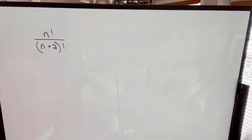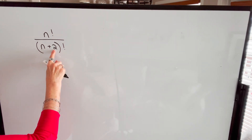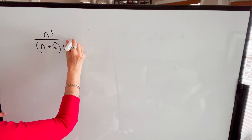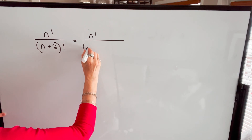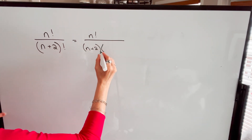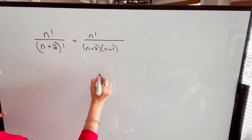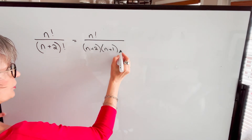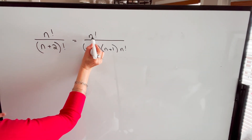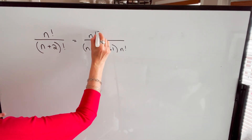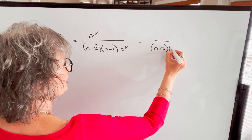Now let's say the largest factorial is in the denominator. We leave the numerator as n factorial. The denominator (n+2)! can be written as (n+2) times (n+1) times n factorial. We stop once we get the same factorial as in the numerator — that cancels — so our result is 1 over (n+2)(n+1).